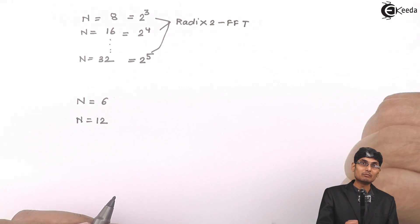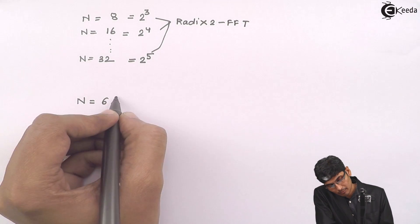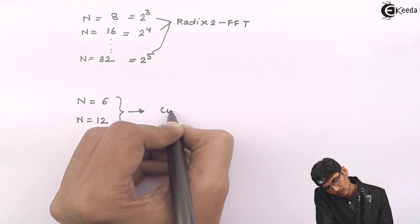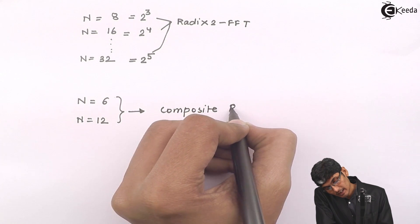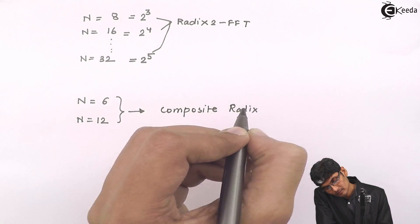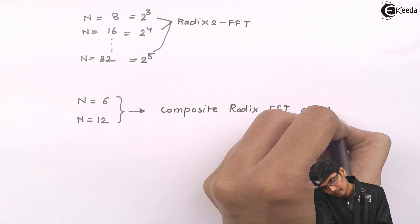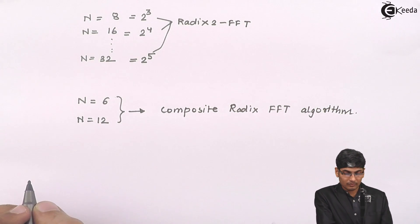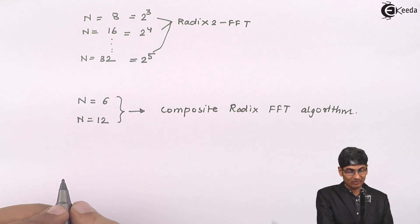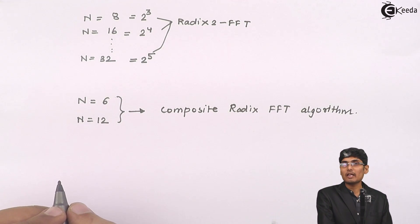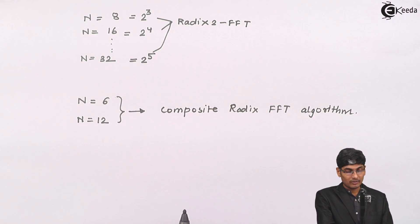Neither do they have any other single base. So how do we solve this type of problem? These problems are solved using the composite radix FFT algorithm. We have developed a new algorithm which will solve such problems in which the samples are not exactly a power of 2. For this type of problem we need to first split N.